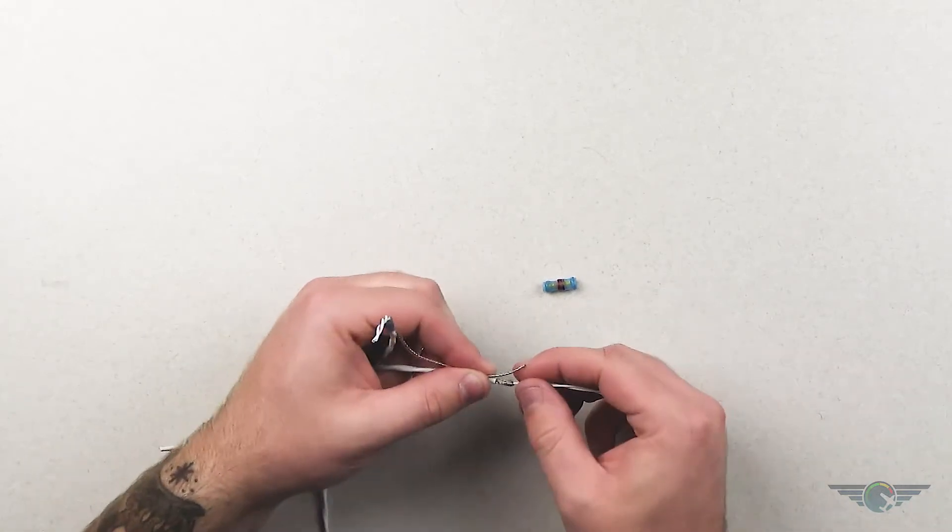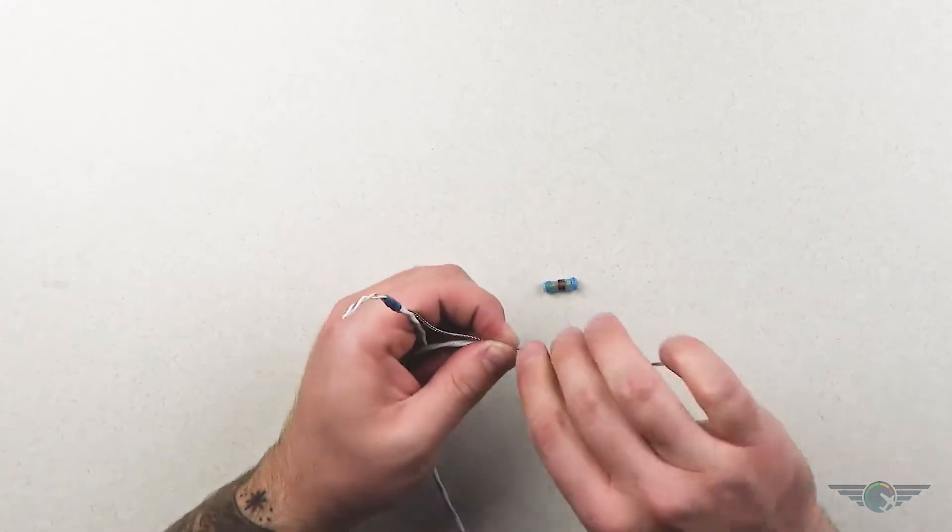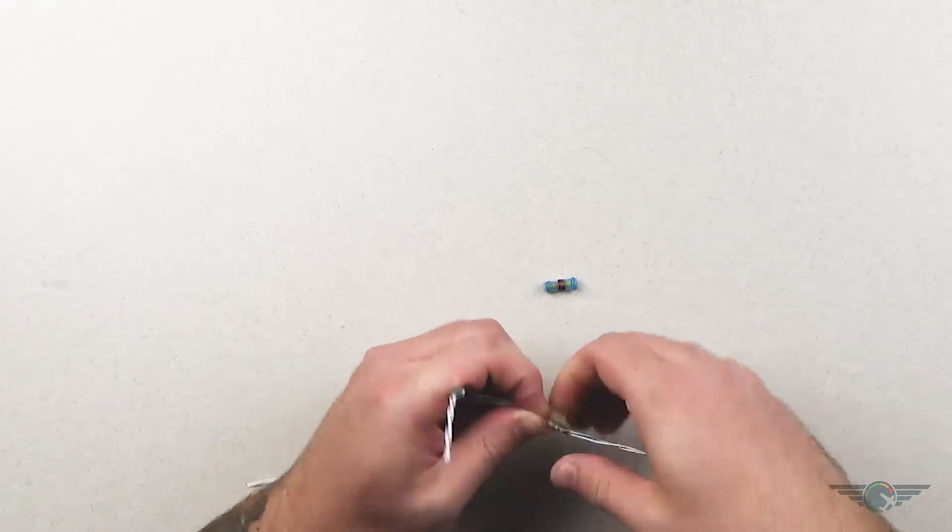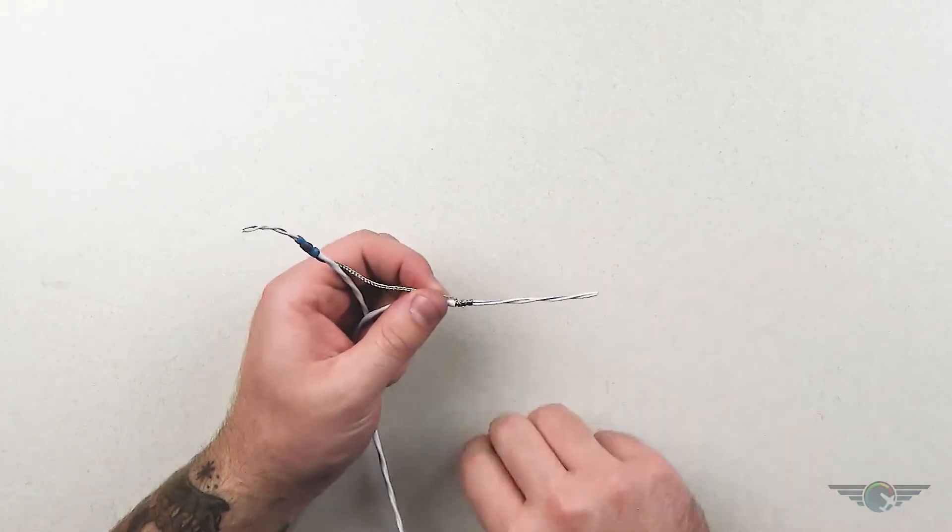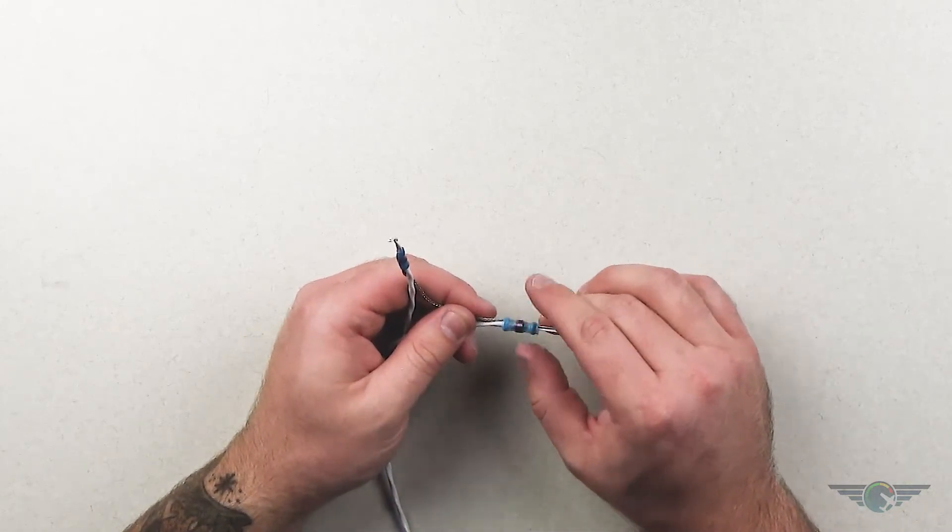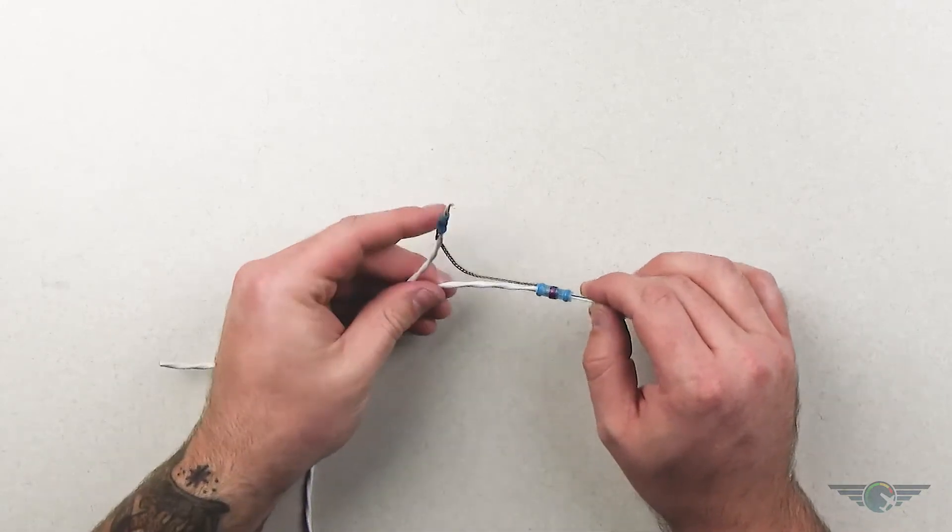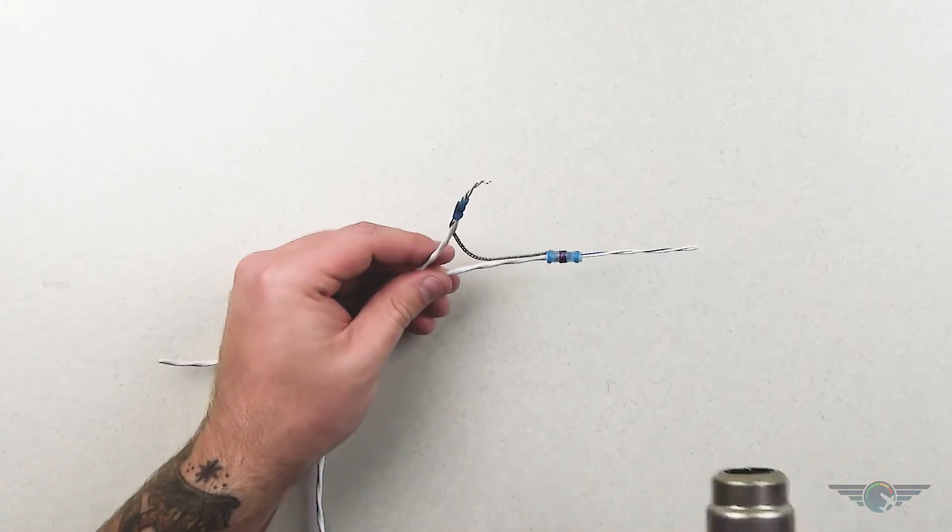Then I'm going to do kind of the same thing - I'm going to wrap this braid around our shield there so we've got a good, solid connection, and then put my solder sleeve right over the top of it, and then again, it's the same process with the heat gun as we used before.